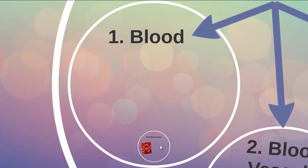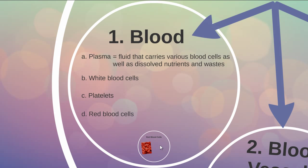First, if we look at the blood, it has four main components: the plasma, the white blood cells, the platelets, and the red blood cells. The plasma is the fluid that carries various blood cells around, as well as dissolved nutrients and wastes — glucose, amino acids, nitrogen wastes — all of that will be dissolved in the plasma.